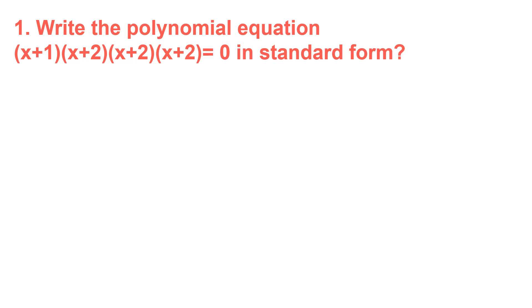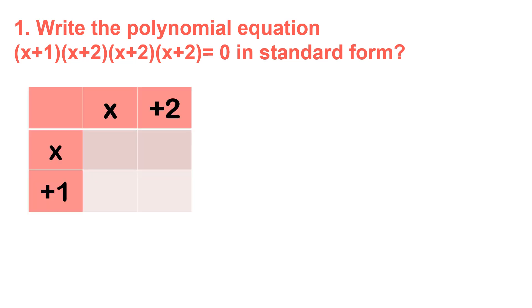Let's start with (x+1) times (x+2) first in this example. Notice that I'm using a table here. So this is x+1 on one side and x+2 on the other.